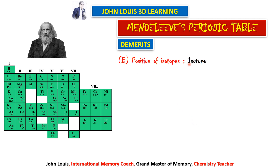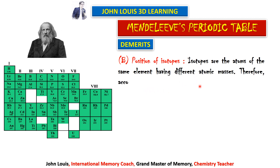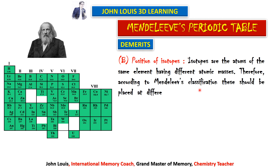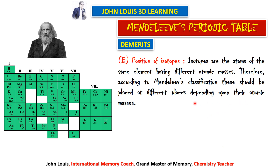The second demerit: position of isotopes. Hydrogen exists in three isotopes with atomic masses 1, 2 and 3. Since elements were arranged in the increasing order of atomic weights, these isotopes would need to be placed in separate groups. But their chemical properties are the same — so they should be in the same group. There was no specific place for isotopes in his periodic table.